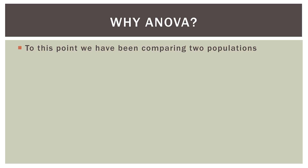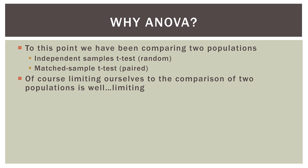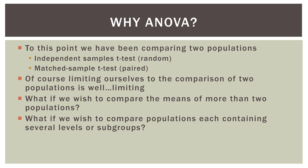So a very quick review: why ANOVA in the first place? Up to this point in statistics, we were looking at comparing two populations — an independent samples t-test, a random sample t-test, and then a matched sample t-test, which we call a paired t-test. Limiting ourselves to the comparison of only two populations is, well, limiting. Sometimes we just have more than two populations we want to compare. What if we wish to compare the means of more than two populations, or compare populations each containing several levels or subgroups? Enter ANOVA.